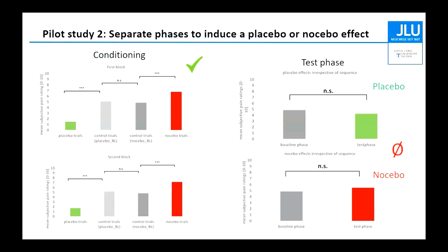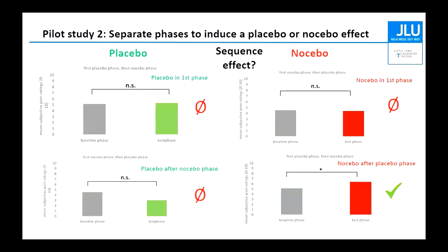We thought perhaps this was intermingled with a sequence effect, so we analyzed the data separately. On the left side we had data for placebo, on the right for nocebo. No difference overall — but we got a placebo effect only in the group which had first undergone the nocebo training. And perhaps we also see a slight nocebo effect, but again only when the nocebo phase came after the placebo. So we went to the original group and asked for help.